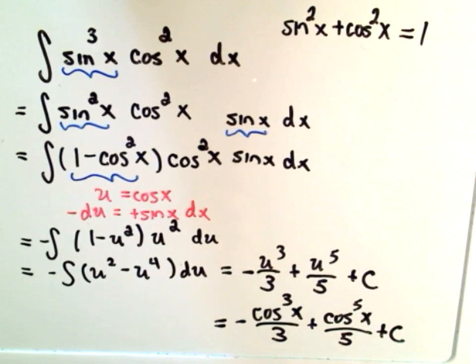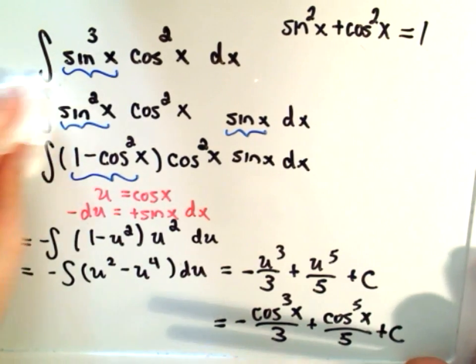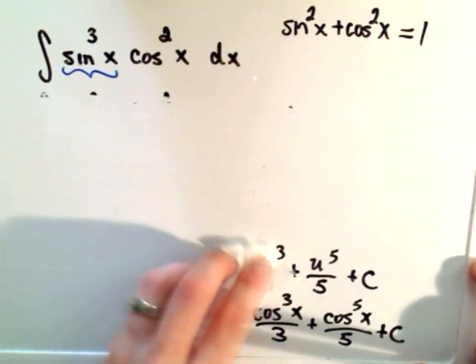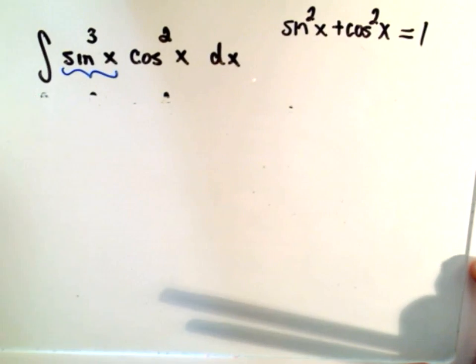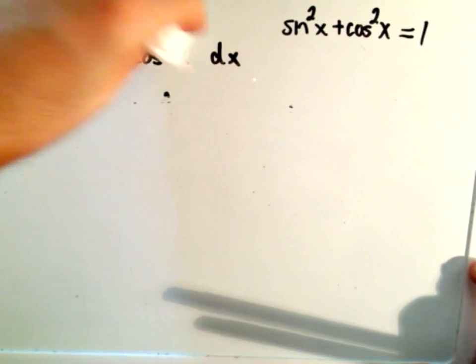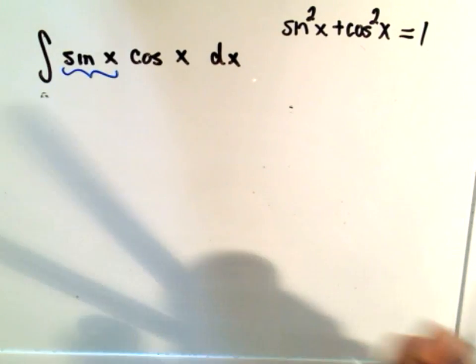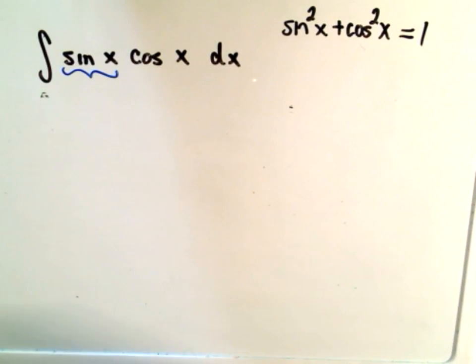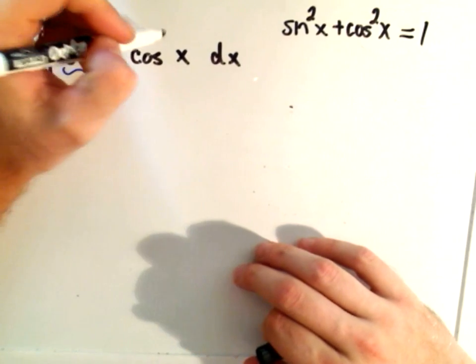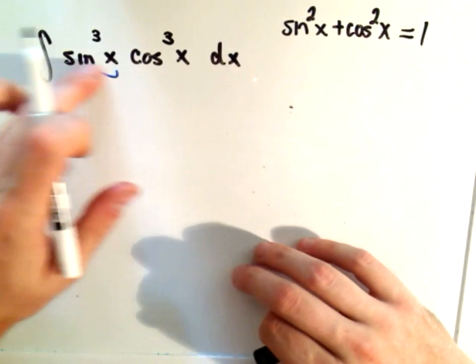Simply now plug your u-substitution back in, so negative cosine cubed of x over three plus cosine to the fifth of x over five plus c. So that's the basic idea. Let's do one more here. Suppose both powers are odd.